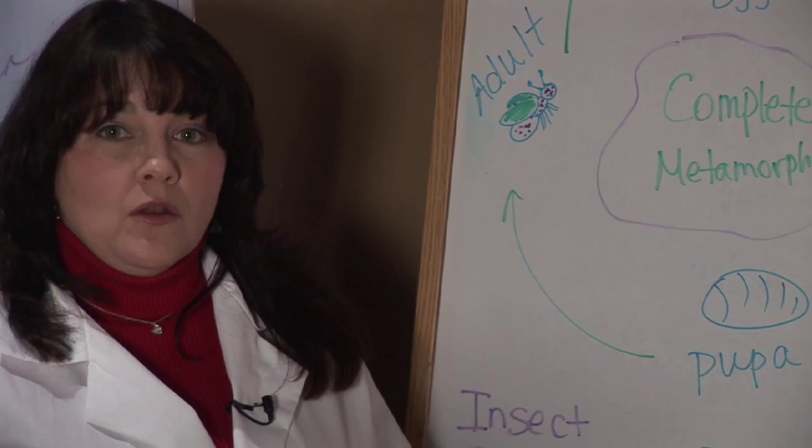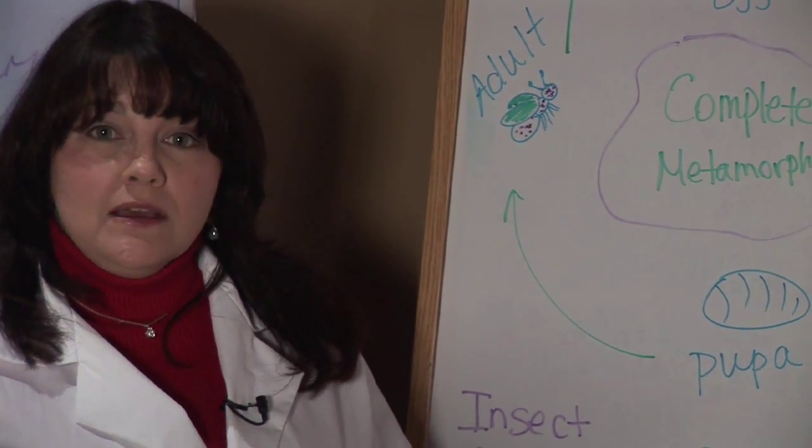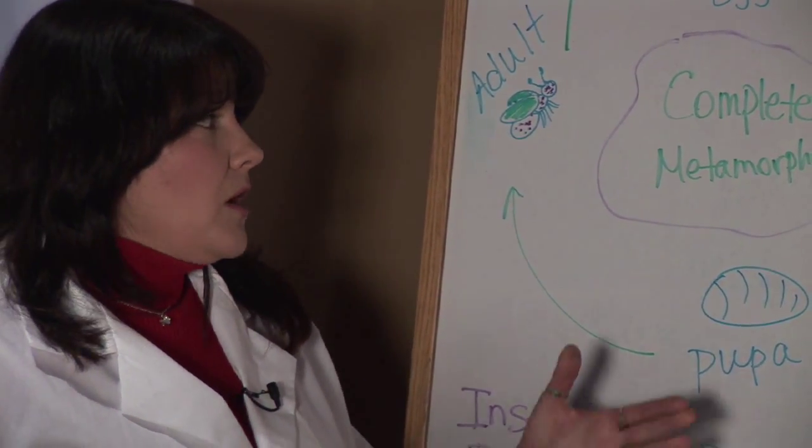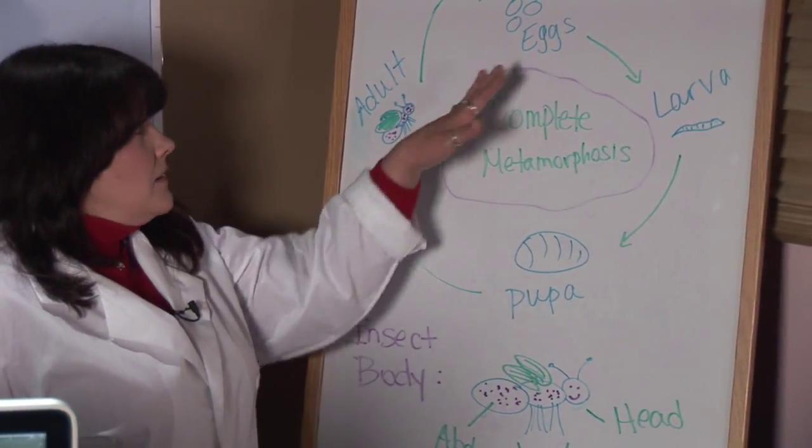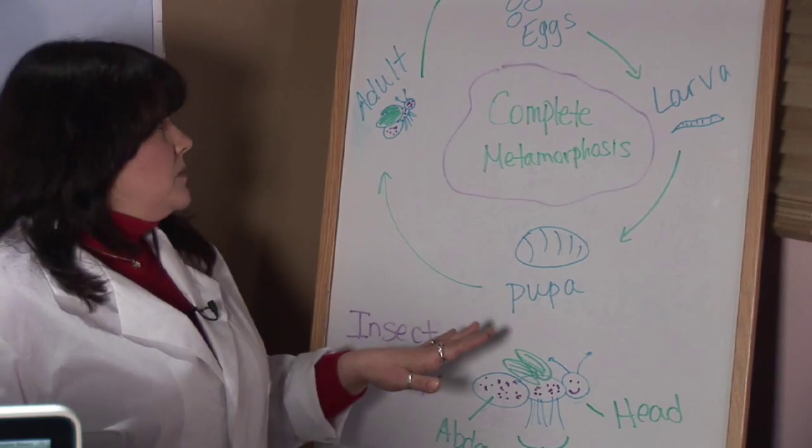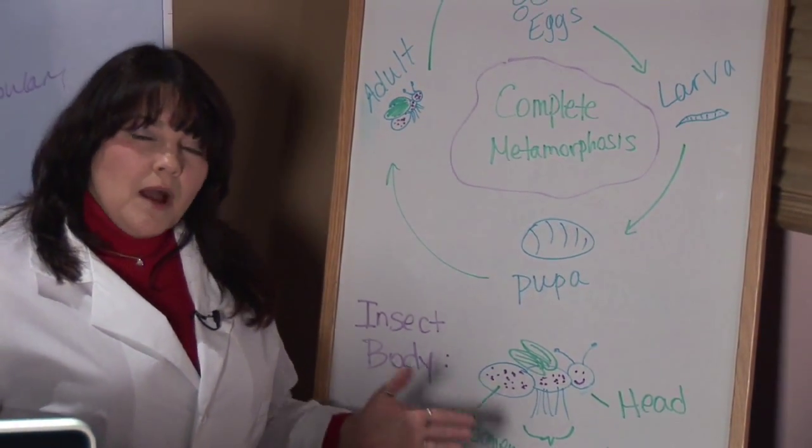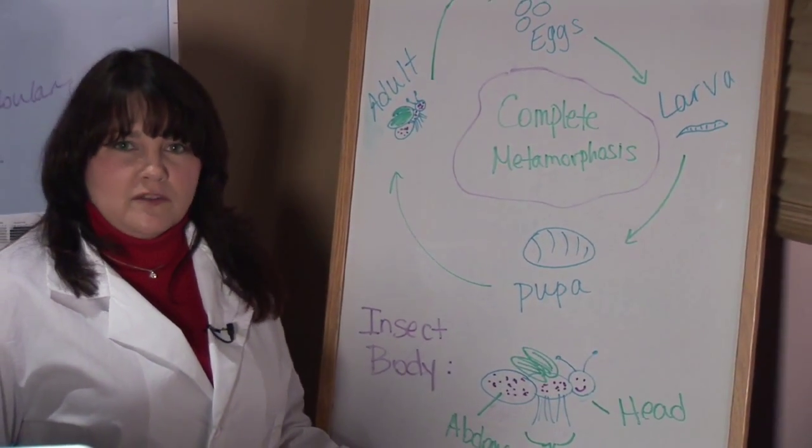But mosquitoes are very dependent on water. You see, mosquitoes, as most insects, go through a process that's called complete metamorphosis. It's their life cycle, from egg to larvae to pupae to adult. You're probably familiar with this concept where butterflies are concerned.